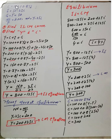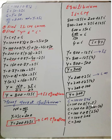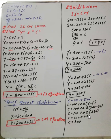We can also find equilibrium consumption. C equals 100 plus 0.8 YD, and YD equals Y minus T equals 300 minus 50 equals 250. So C equals 100 plus 0.8 times 250 equals 100 plus 200 equals 300. Consumption also equals 300.